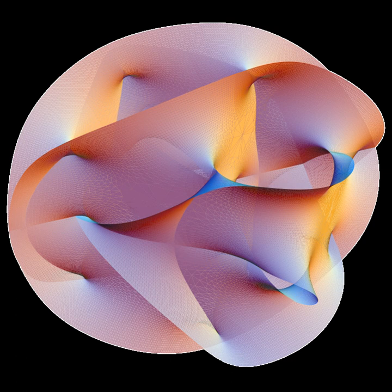Every heterotic string must be a closed string, not an open string. It is not possible to define any boundary conditions that would relate the left-moving and right-moving excitations because they have a different character.